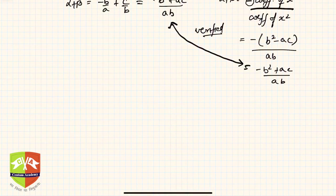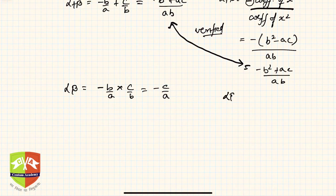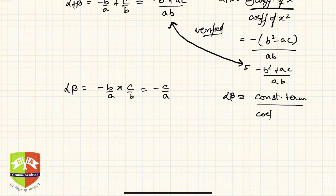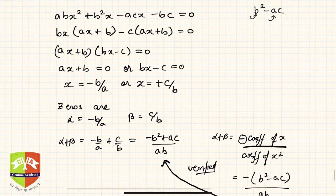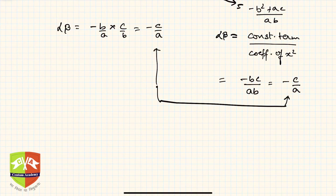Now the product of zeros: α × β = (-b/a) × (c/b) = -c/a. From the polynomial, the product of zeros is given by the constant term divided by the coefficient of x². The constant term is -bc and the coefficient of x² is ab, so that gives -bc/ab = -c/a.